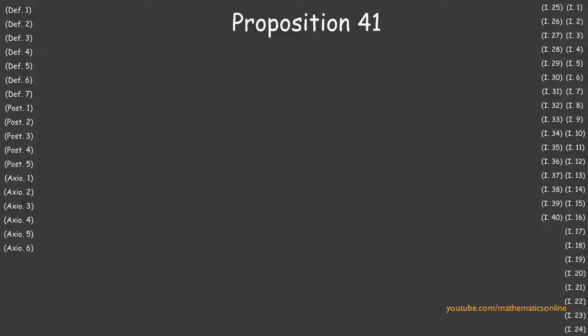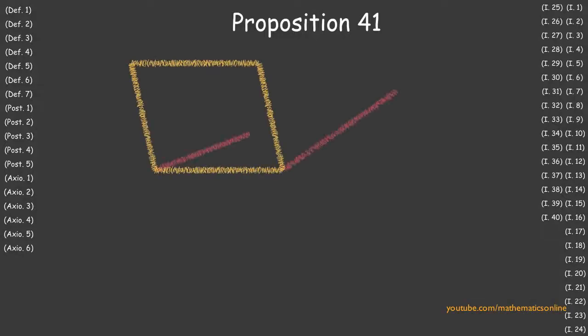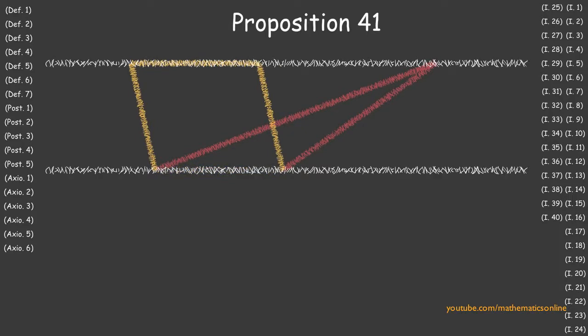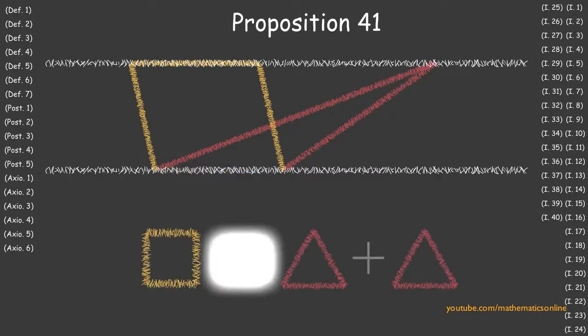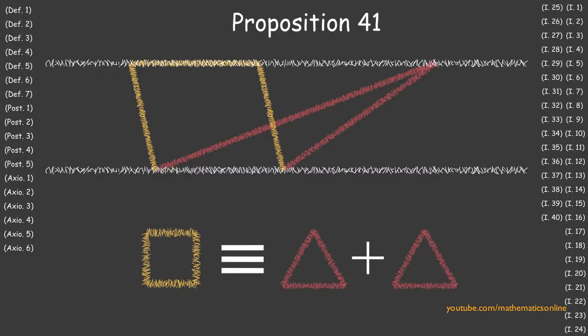In Proposition 41, we prove that if a parallelogram and a triangle have a base in common and are in the same parallel lines, then the parallelogram is congruent to double of the triangle.